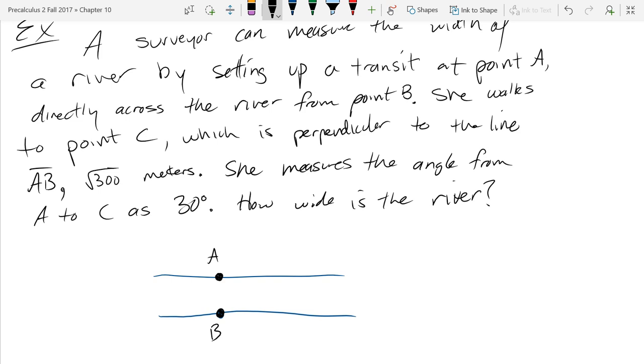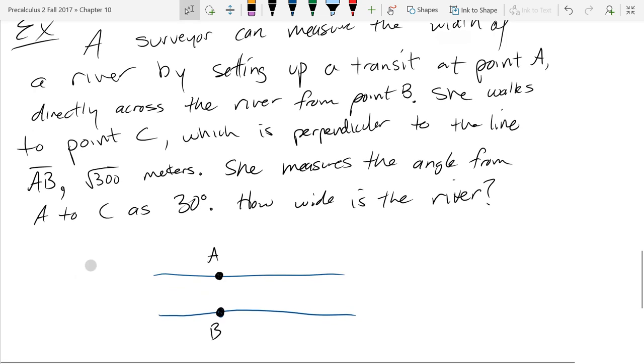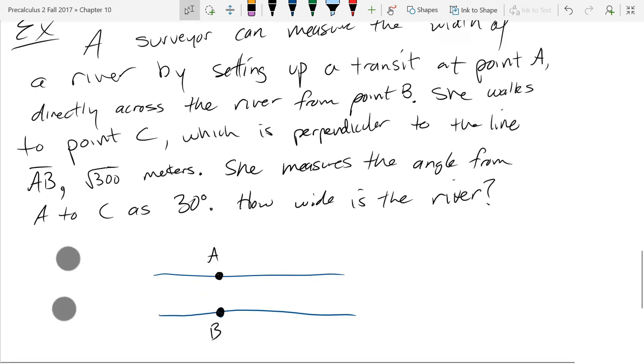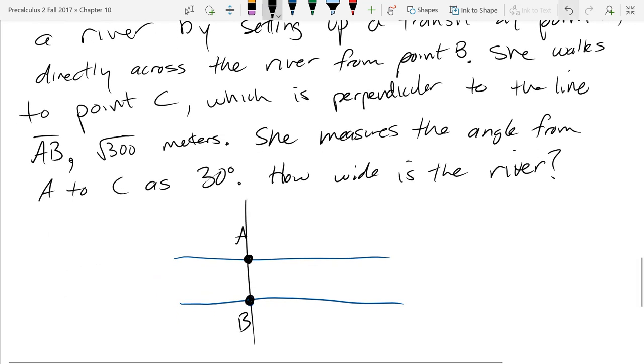She walks to point C which is perpendicular to the line AB. If I draw a line AB, perpendicular means walking across the riverbank on the side with A. That'll be point C, and the distance is square root 300 meters.